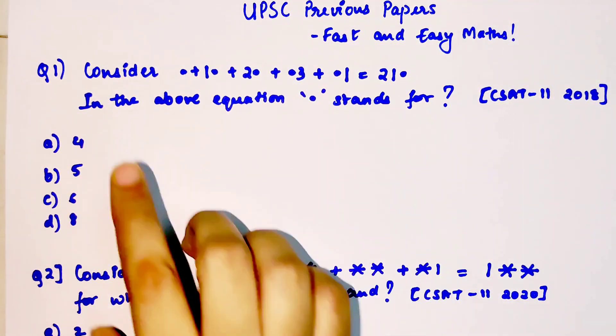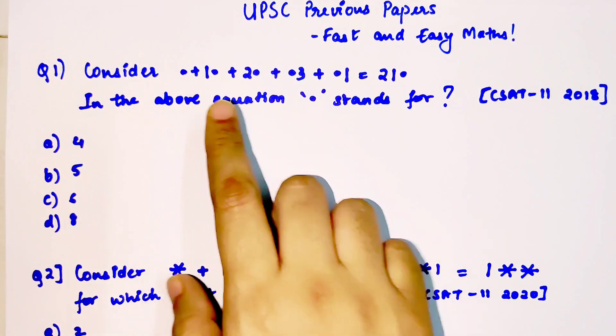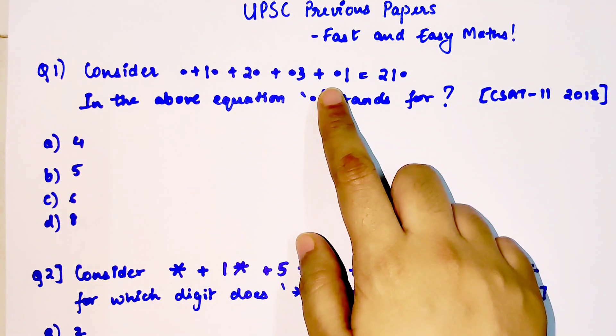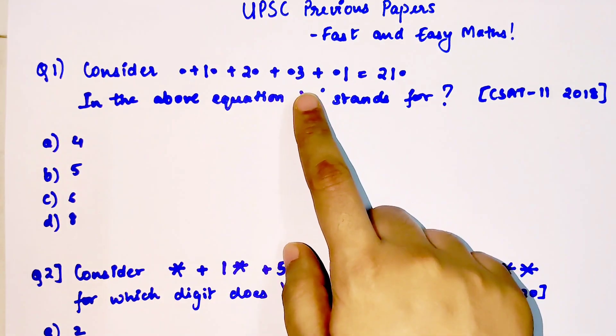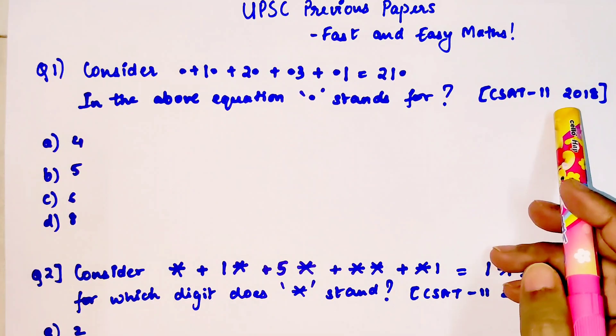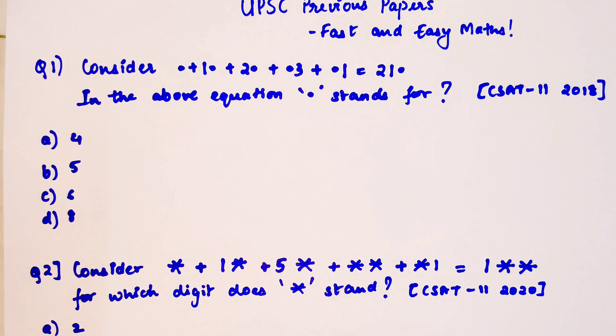The question is: consider a dot symbol equation - dot + 1, dot + 2, dot + 3, dot + 3, dot + 1 = 21. In this equation, you need to find out what does this dot stand for. This question was asked in CSAT 2018, and a very similar question was asked in 2020, which is why I picked this question.